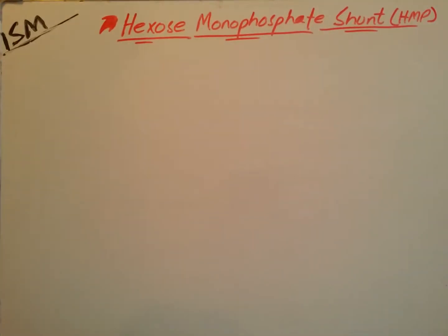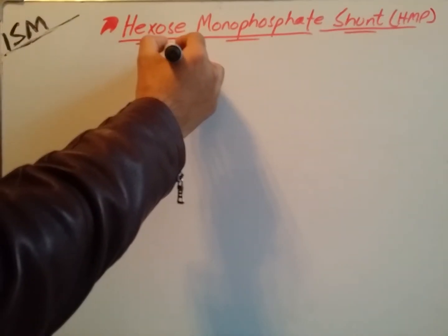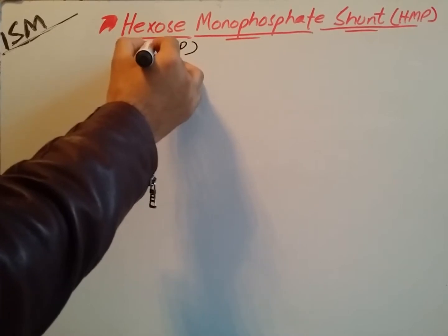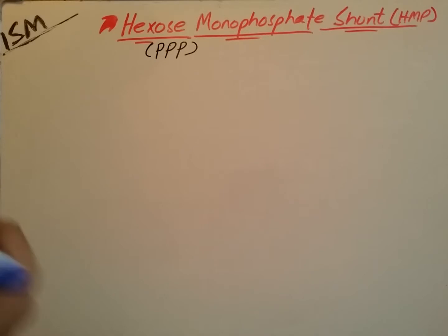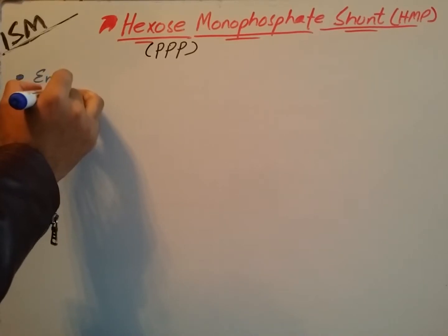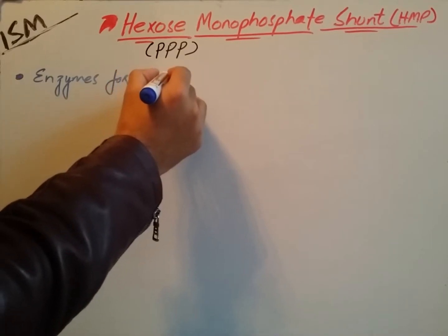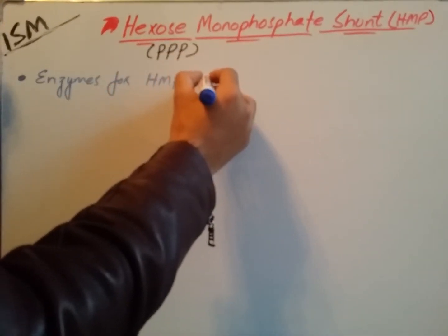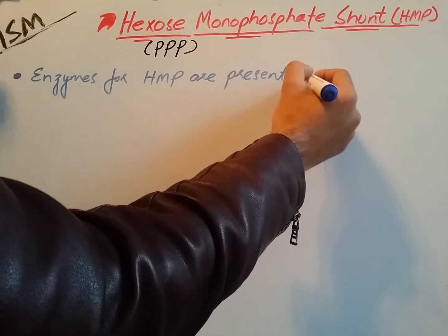Today we are going to discuss the Hexose Monophosphate Shunt, also known as the pentose phosphate pathway. It is very essential for the production of NADPH. The enzymes for HMP are present in the cytosol.